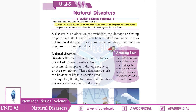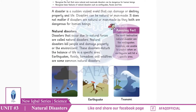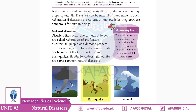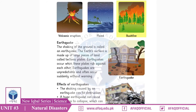Natural disasters are like earthquakes, floods, and fires. These disasters can damage or destroy property and life. They can be natural or man-made. Natural disasters include earthquakes, floods, tornadoes, and wildfires. They cause a lot of damage and destruction.